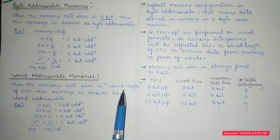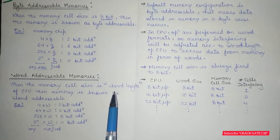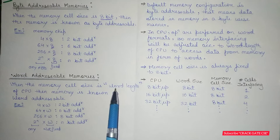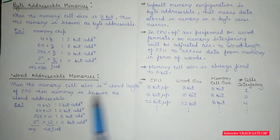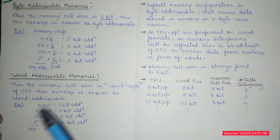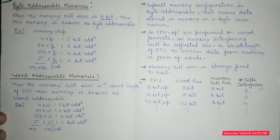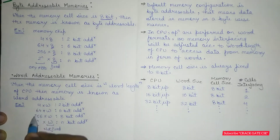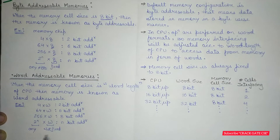When the memory cell size equals the word length, the memory is known as word addressable. The word length is the length of the word processed inside the CPU. If a CPU processes 8 bits, the word length is 8 bits; if 16 bits, the word length is 16 bits, and so on. Here in the memory chip configurations, the size of each cell is not fixed, therefore it is known as word addressable memory.